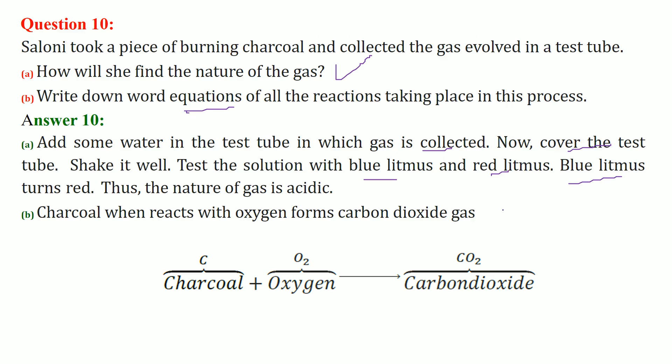If blue litmus turns red, then the nature of gas is acidic. Charcoal is basically carbon. Carbon will react with oxygen O2 and form CO2 carbon dioxide.